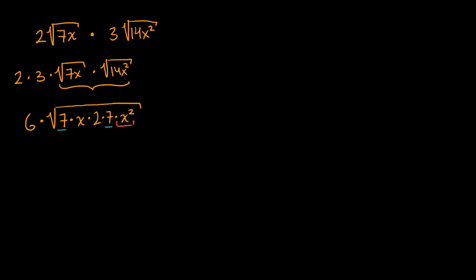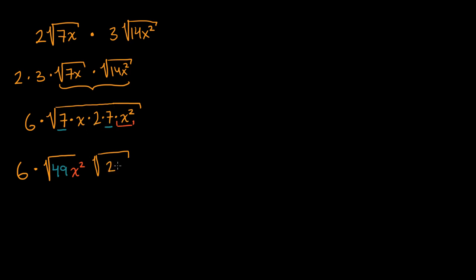Seven times seven is a perfect square — that is 49. So let's rewrite this a little bit. This is going to be six times the square root of — let's put all the perfect squares first. So seven times seven, that is 49, and x squared. So 49 x squared. And then I'll separate the two radicals. Whatever else is left: I've already used a seven, a seven, the x squared — I have a two x left, times two x.